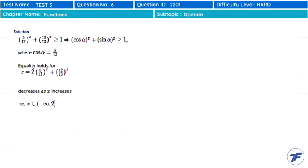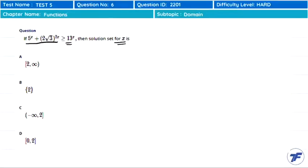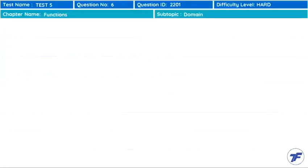I'll take 13^x to the denominator. See carefully, this becomes (5/13)^x. And this 2√3 to the power 2x becomes (2√3)² to the power x, which can be written as 12^x. So it becomes (12/13)^x.